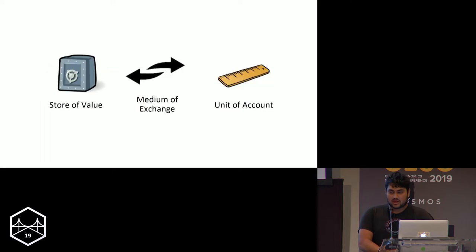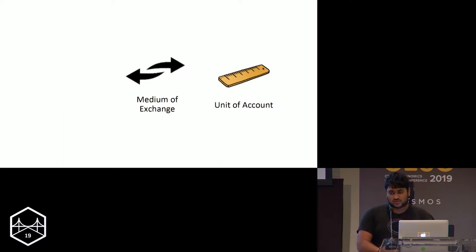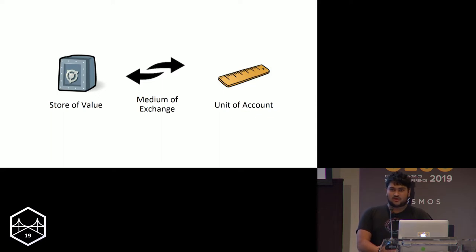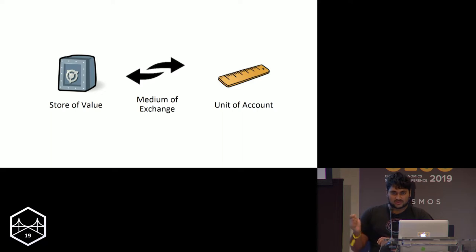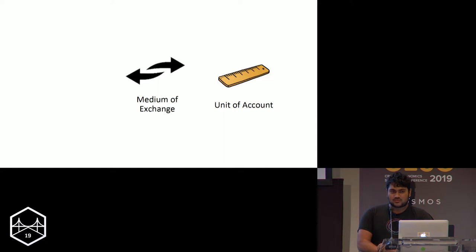The question then is: what is this spectrum measuring? Of the three categories, the one that seems most out of place is store of value. For example, maybe gold is a better store of value, but intuitively it feels like it has worse moneyness. Or maybe the S&P 500 is a better store of value than US dollars, but that also feels like it has worse moneyness. So it probably has more to do with medium of exchange and unit of account.